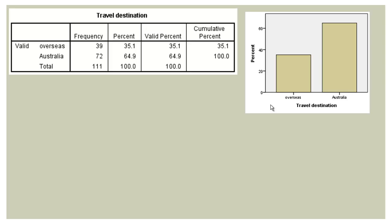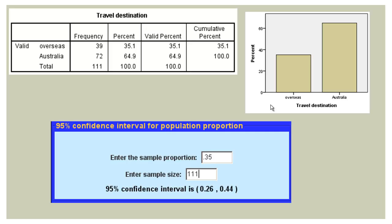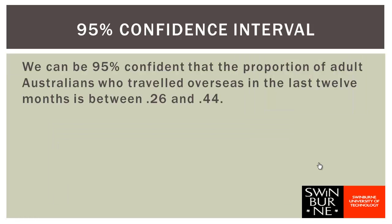On the Blackboard website you'll find a Java applet that calculates 95% confidence intervals for the proportion. That gives you output showing the 95% confidence interval is from 0.26 to 0.44. That tells us we can be 95% confident that the proportion of adult Australians who travelled overseas in the last 12 months is between 0.26 and 0.44. So it looks like the proportion of Australians who travelled overseas has increased since 2010, when it was only 0.25.